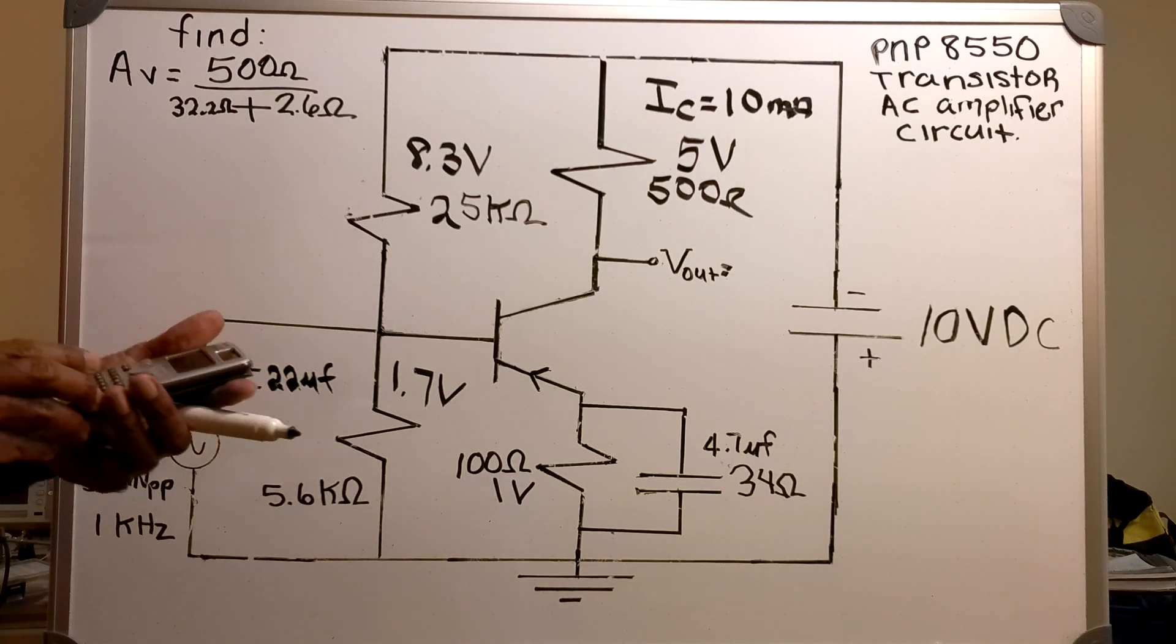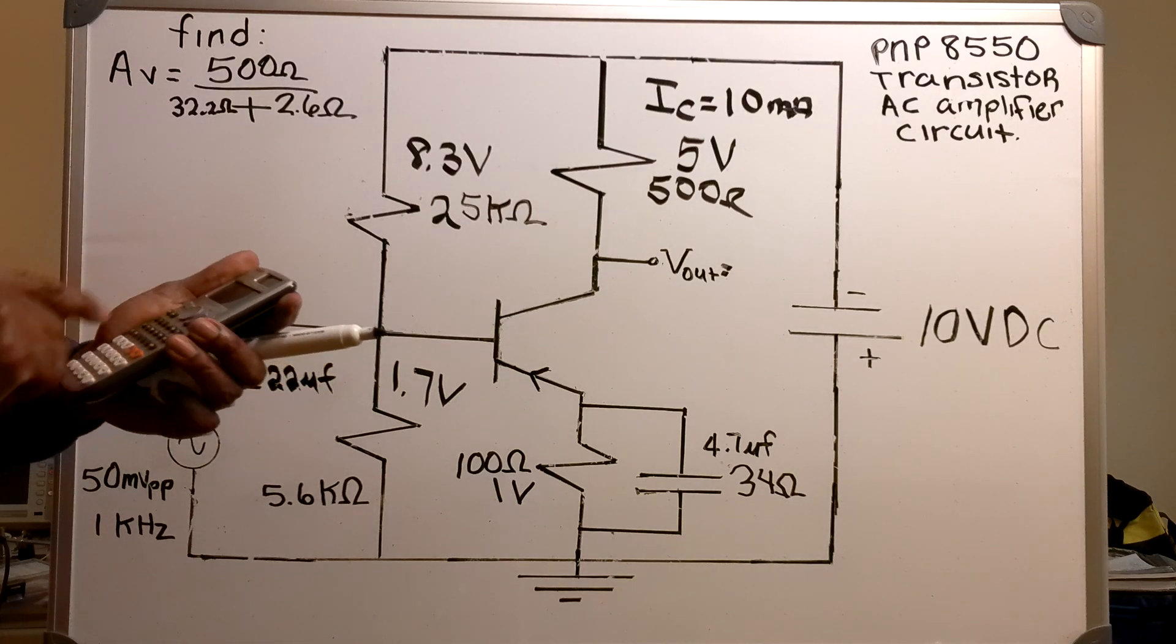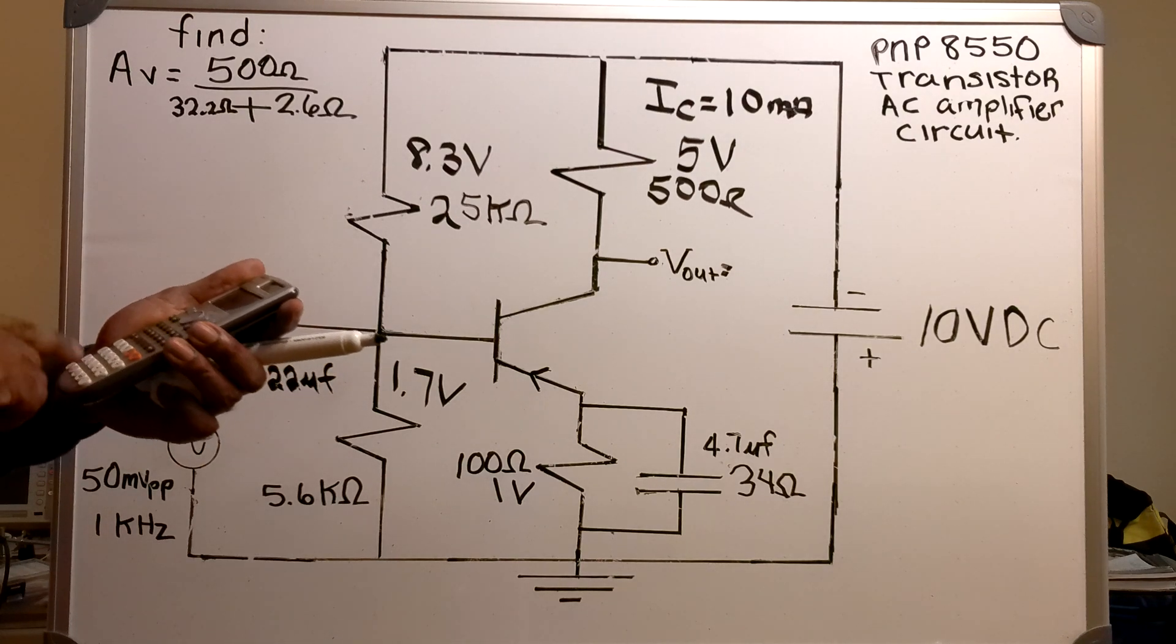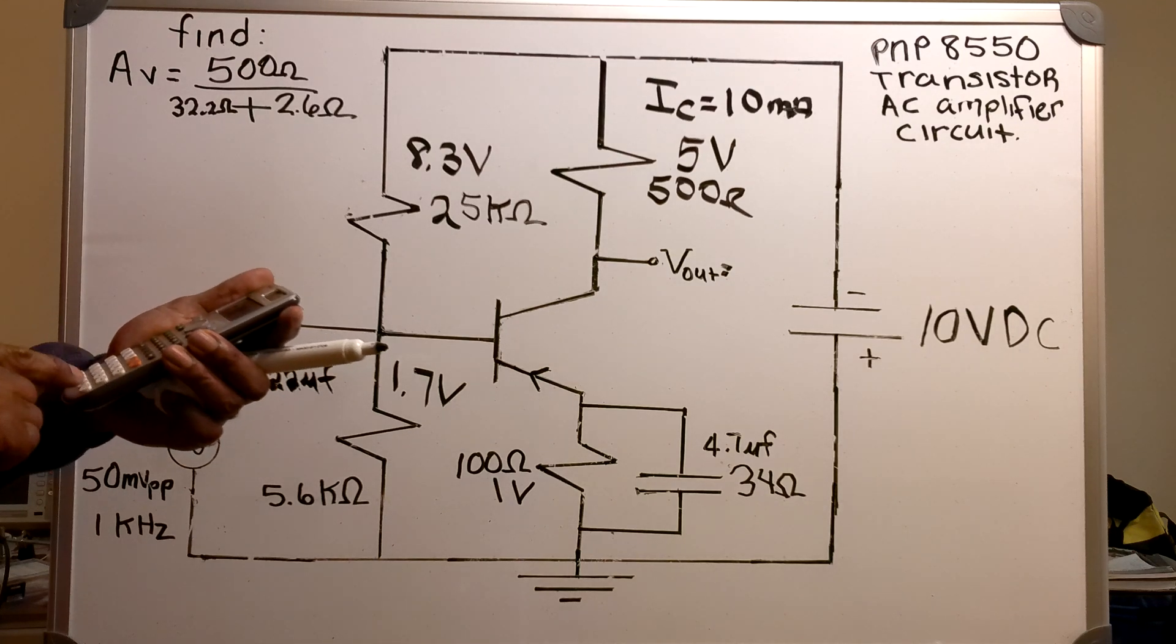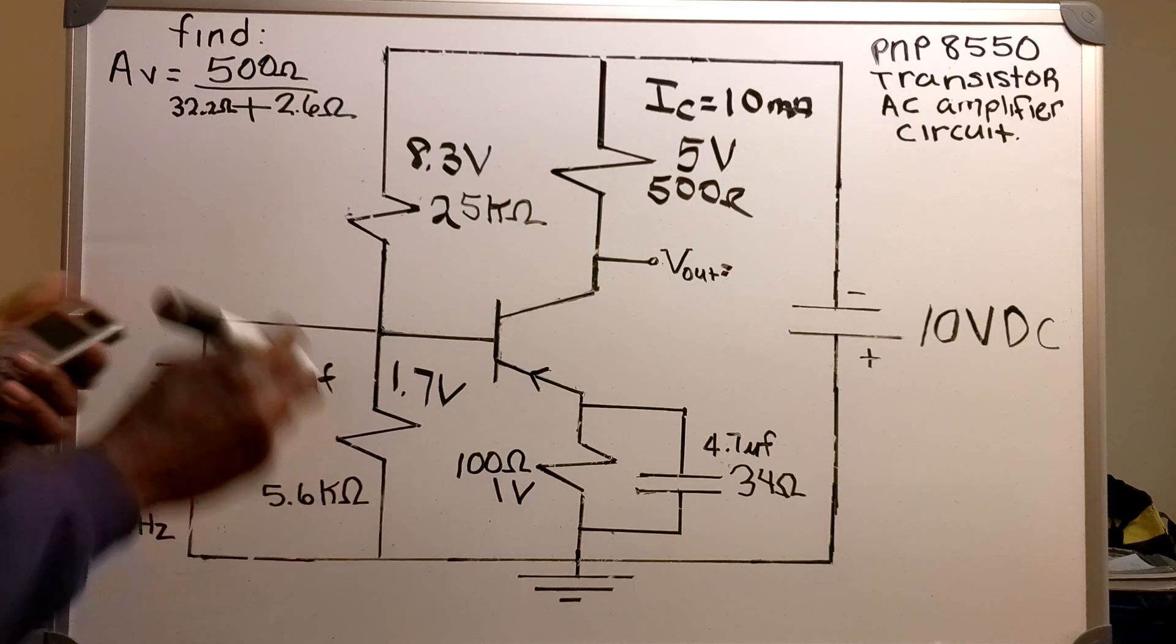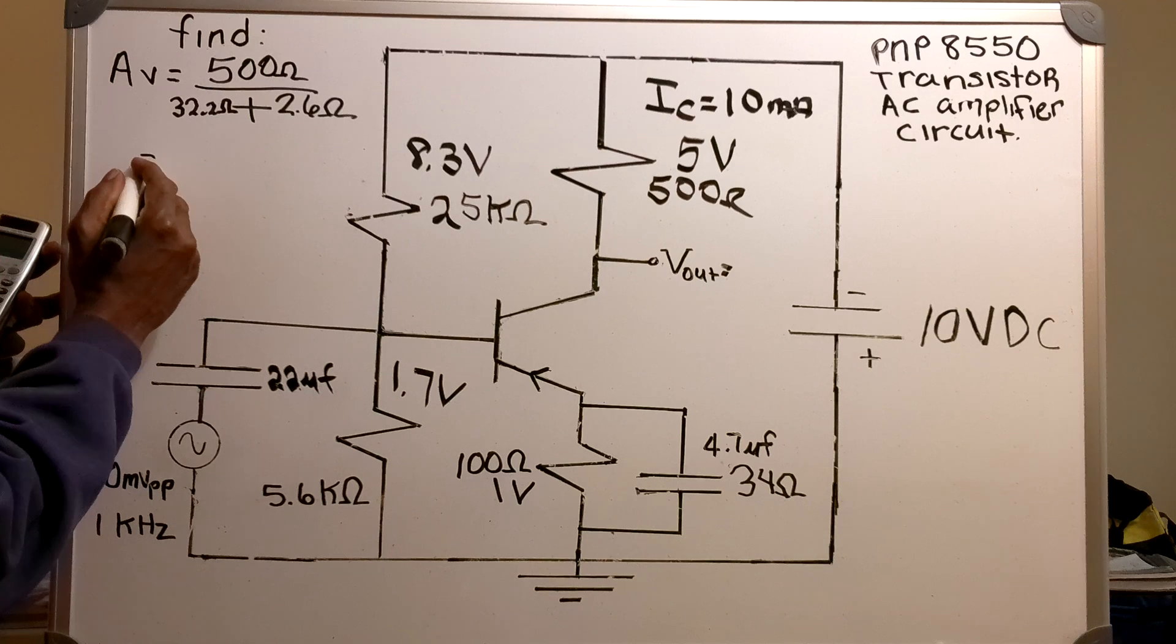So now my voltage gain is 500 ohms over 32.2 ohms plus 2.6 ohms. That gives you a voltage gain of 14.36.